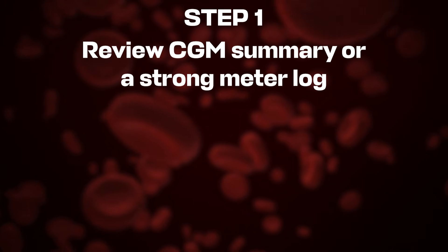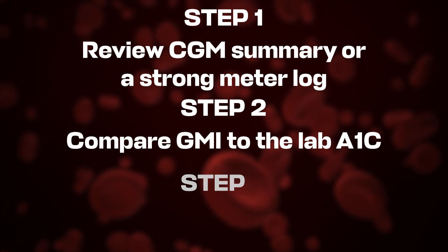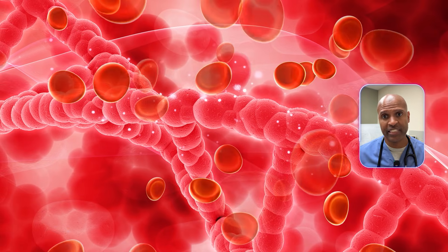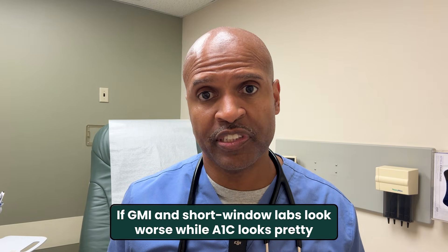If you want a clinic-ready plan, here's the playbook. Step 1: review your CGM summary or a strong meter log. Step 2: compare GMI to lab A1C. Step 3: add a short-window lab that ignores red cell lifespan — fructosamine or glycosylated albumin reflect roughly the last 2 to 3 weeks. If GMI and those short-window labs look good while A1C sits a bit high, you likely have longer-lived cells and an A1C that's overshooting reality. If GMI and short-window labs look worse while A1C looks pretty, you may have shorter-lived cells and an A1C that's undershooting reality.